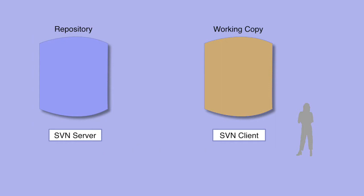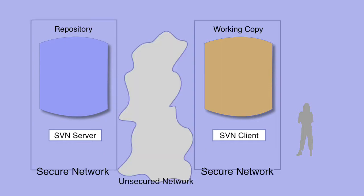If your client is communicating over an insecure network such as the internet, then you may need to secure the username and password exchange. Most basic subversion installations use basic authentication, which will pass the username and password pretty much in open text — the password is only weakly encrypted. If you need to secure this exchange, you will need to use a more secure, encrypted method of exchanging the username and password.